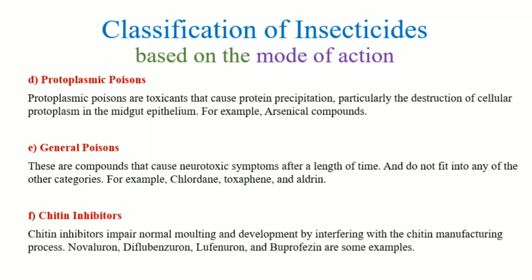General poisons show neurotoxic symptoms but do not fit into any of the other categories, so they are kept in the general poisons category. Examples are chlordane, toxaphene, and aldrin. Next, chitin inhibitors are insecticides which impair the normal molting process so that chitin is not properly formed. Examples include novluron, diflubenzuron, and buprofezin.